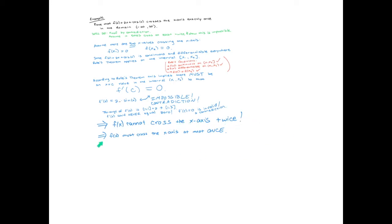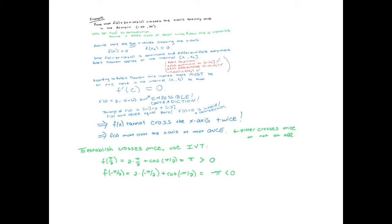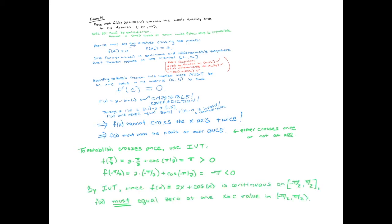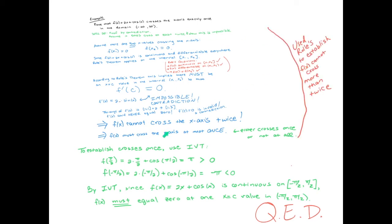So f(x) cannot cross more than twice — at most the function would cross one time, meaning it crosses either once or zero times. Now to establish that it does cross, let's use the Intermediate Value Theorem. If we plug in π/2 and −π/2, we get a positive number and a negative number, so it must hit the axis at some point between −π/2 and π/2. So just to review: in the first part we used Rolle's Theorem to show that crossing more than twice is impossible. Then either it doesn't cross at all or exactly once. The IVT confirms it does cross, so it must cross exactly once.